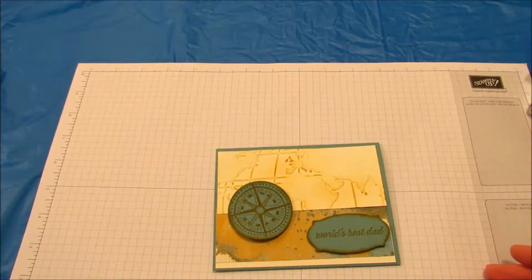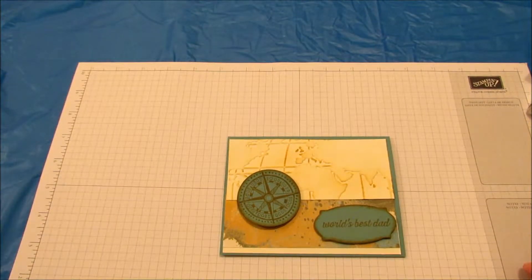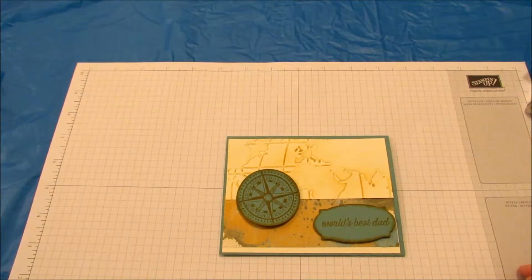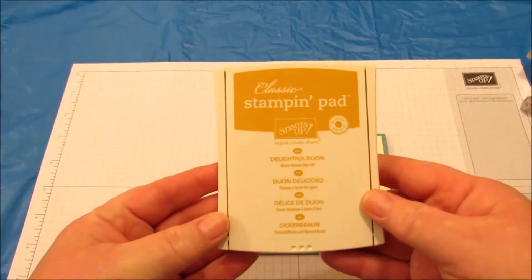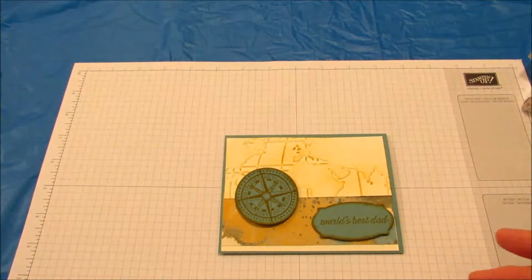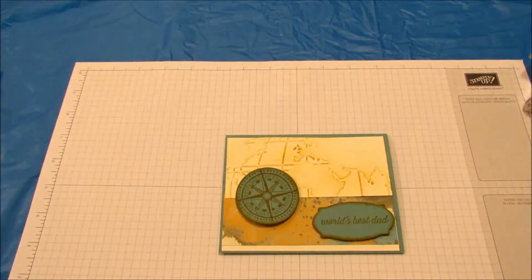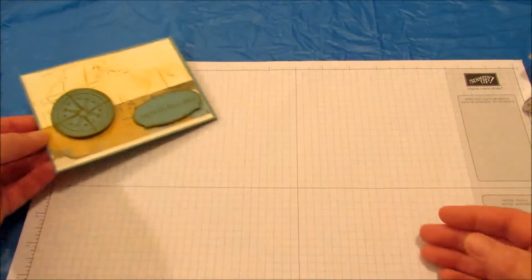We're also going to be using this label frame from the Rose Garden Framelits. We'll also need some Delightful Dijon ink, a sponge of course, Stamping Dimensionals, and our Snail. Let's start now.